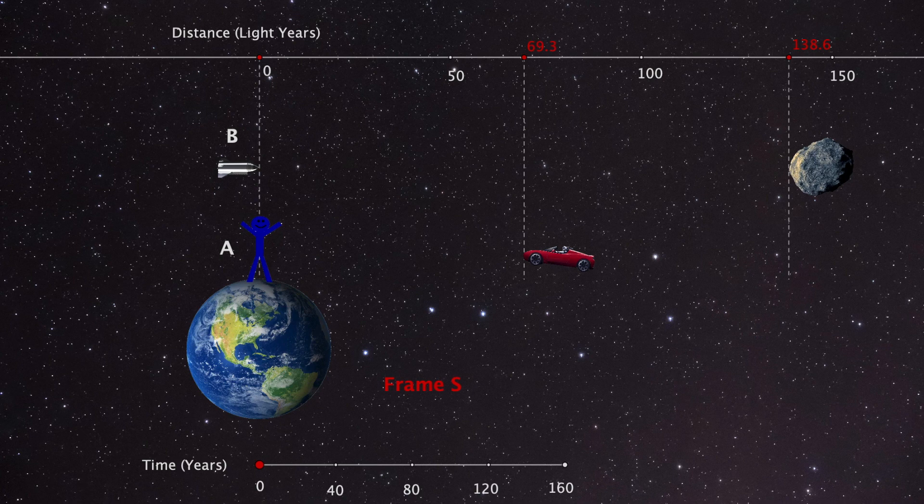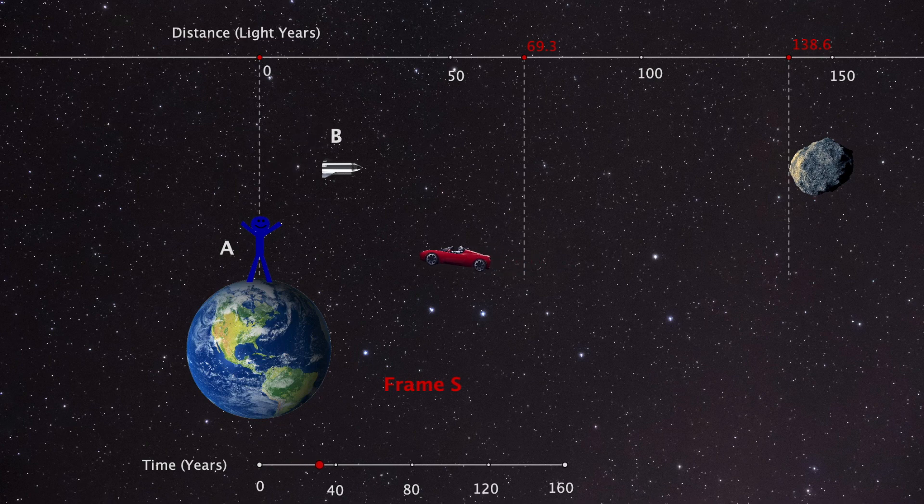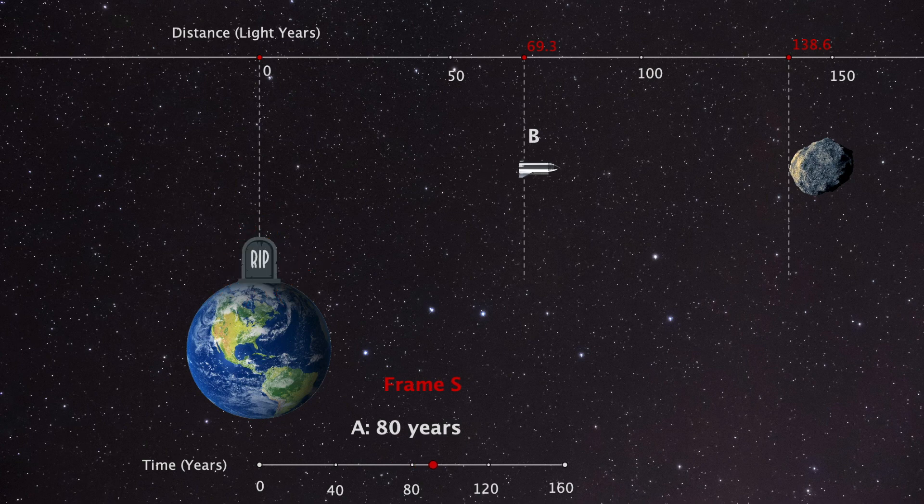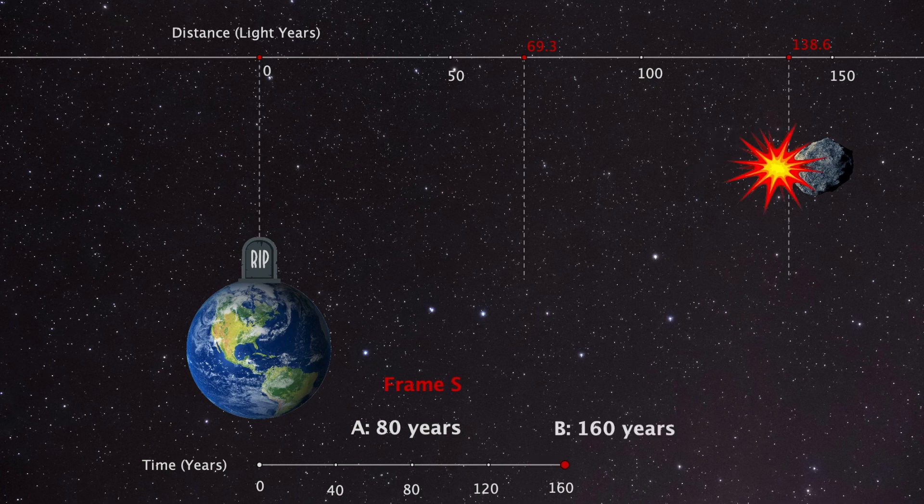So, now we have everything set up in the Earth's frame. Let's run the simulation to see what that looks like. From the perspective of Earth, we can make the following statements. Observer A lived 80 years since he was at rest. And Observer B lived 160 years since his time was dilated by a factor of 2.